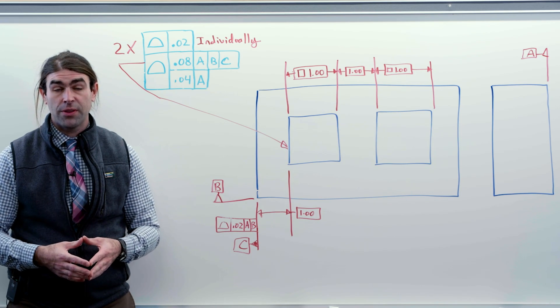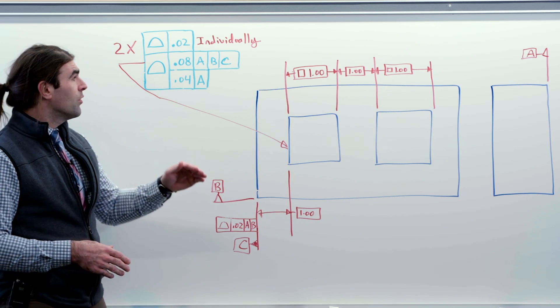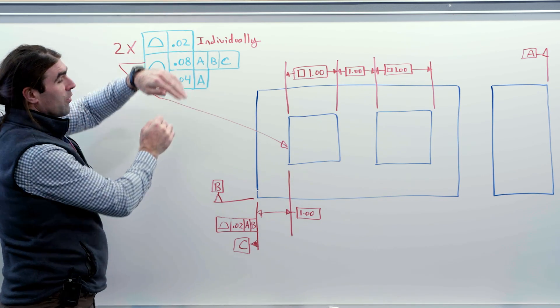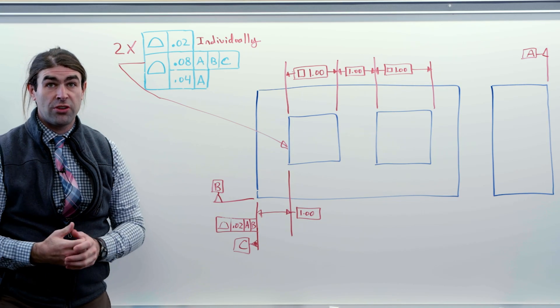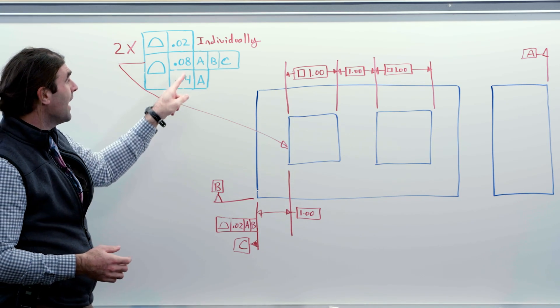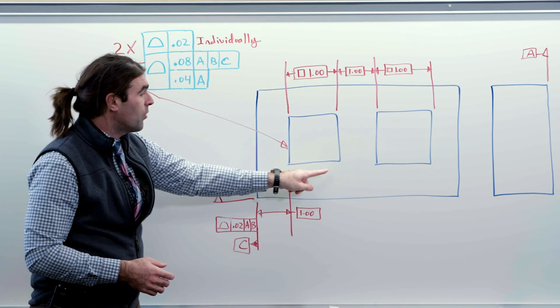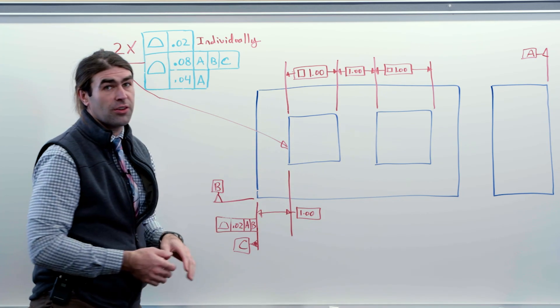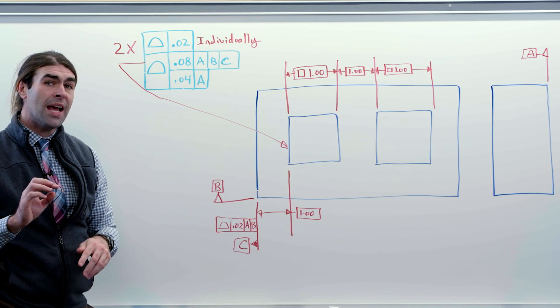So without anything else, this 80 thousandths is just a regular profile you would check in the normal way you check any other profile. There's an 80 thousandths tolerance zone total around each of these little squares that you check to the datum reference frame.